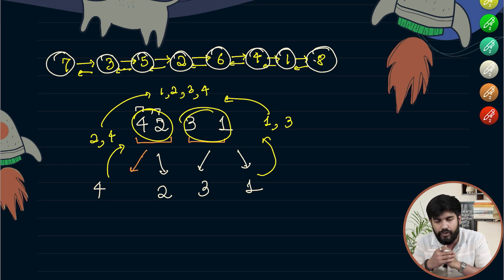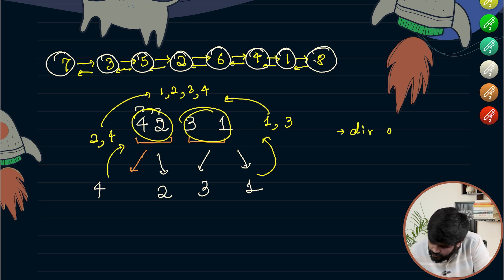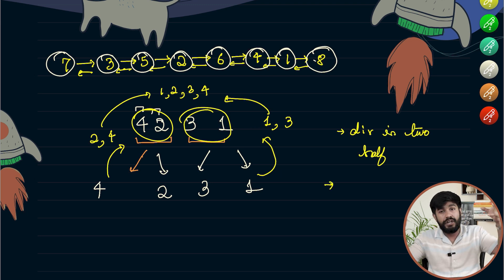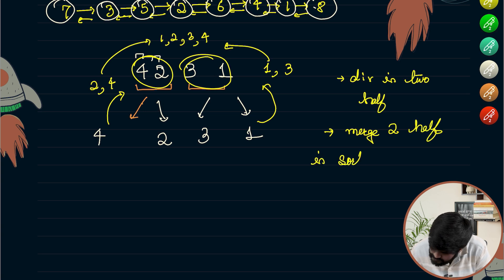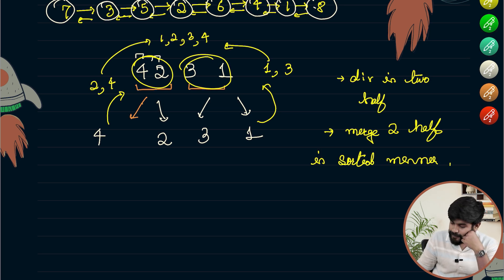If you observe, the crux of merge sort lies in two important things. The very first one is division into two halves, and the very next one is merging two parts in a sorted manner — merge two halves in sorted manner. We need to implement the same thing for the doubly linked list.